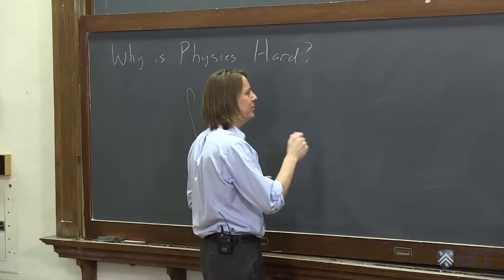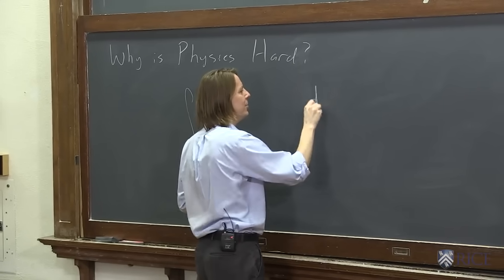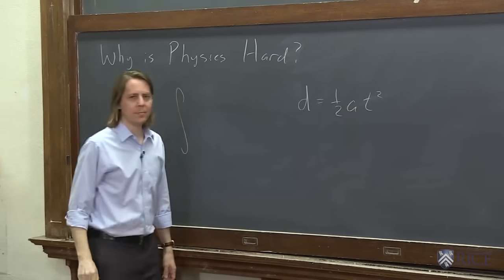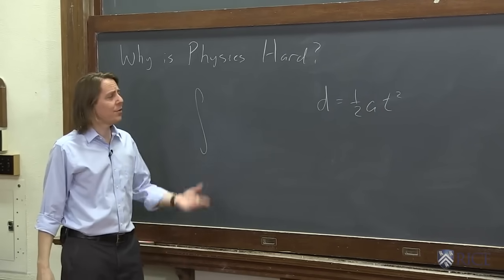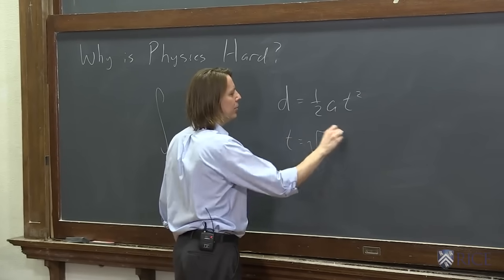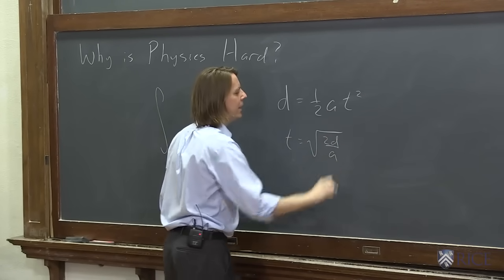So what I've found holds up students sometimes is, say we have a formula like this: d equals one half a t squared. And we say, let's solve this for t. Well, in a physics class, we're going to say, well, then t is the square root of 2d over a.